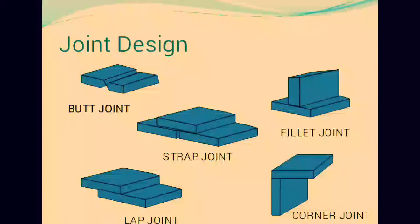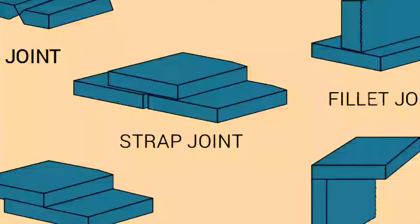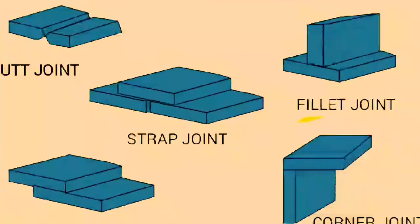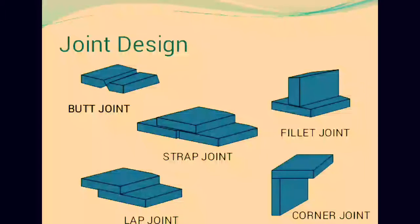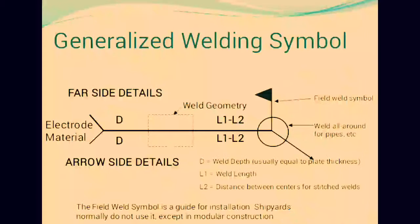In joining, there are some joint designs used for joining purposes: butt joint, strap joint (similar to a rivet joint), fillet joint (T-shape), and lap joint (like a clapping shape where metals overlap).